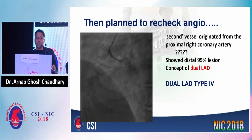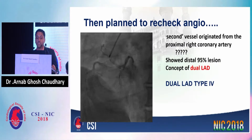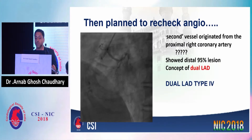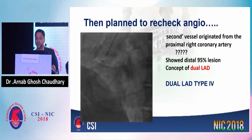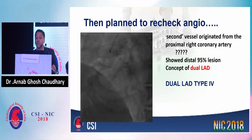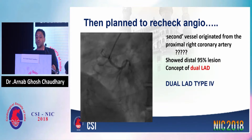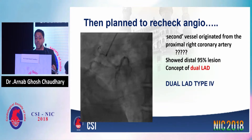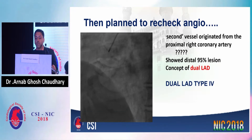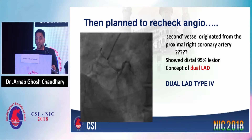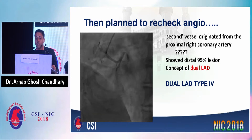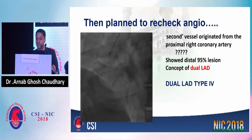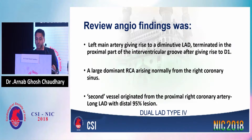So we planned to recheck the angio. On review, in the right shoot, we had seen a second vessel originating from the proximal RCA, and that vessel showed distal 95% stenosis. So we thought this could be a dual LAD — a type 4 dual LAD.